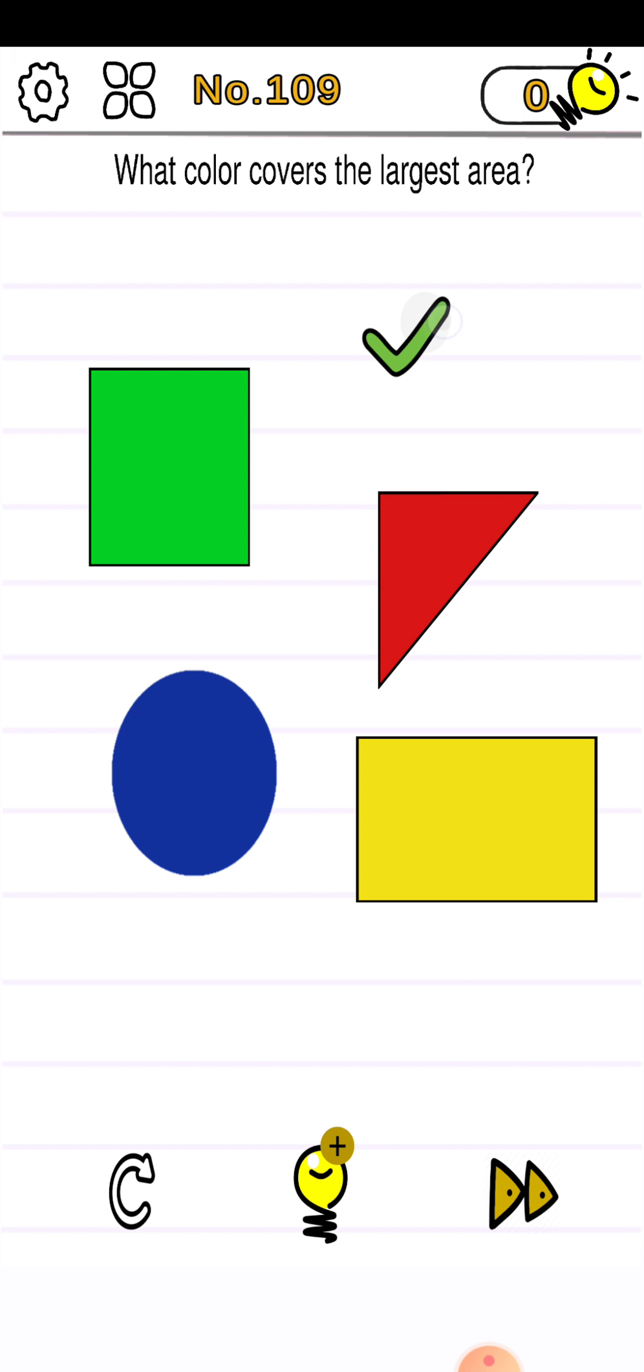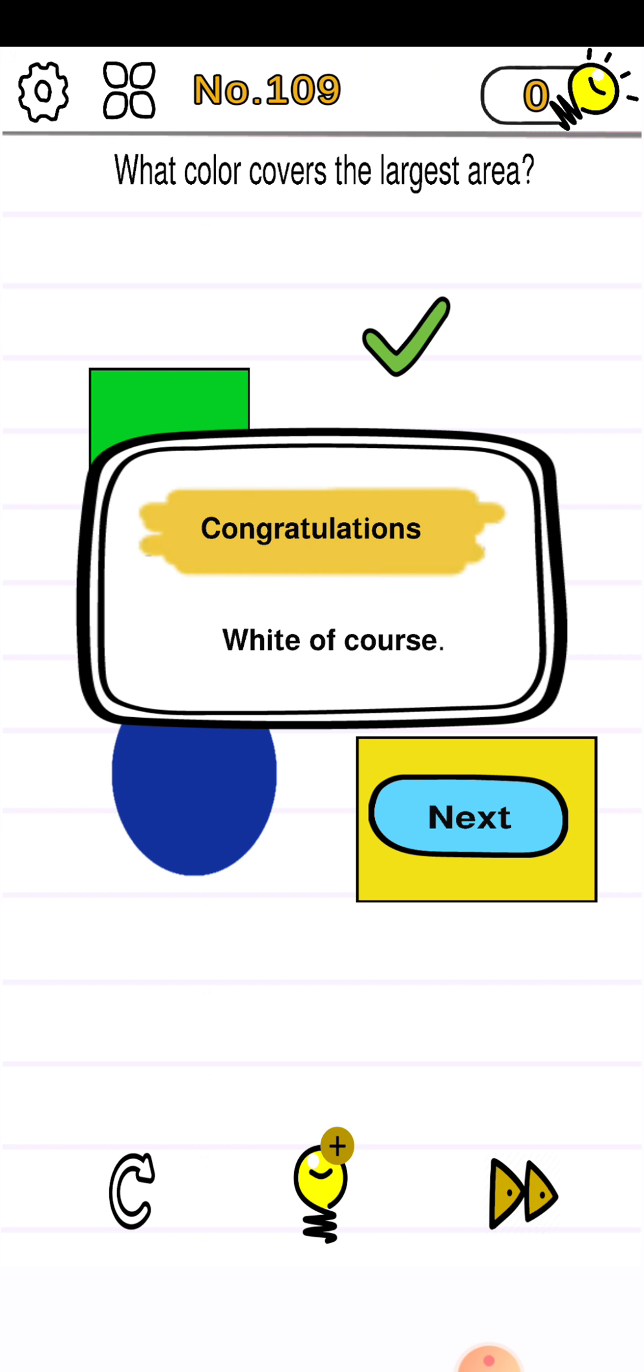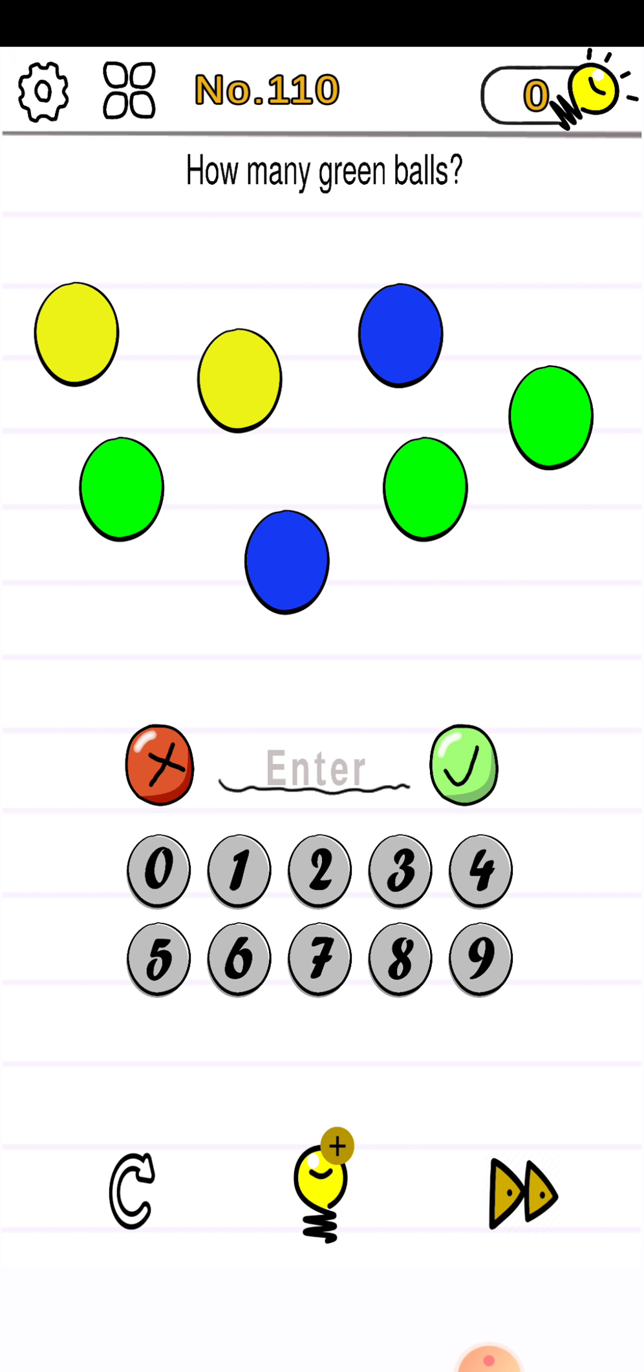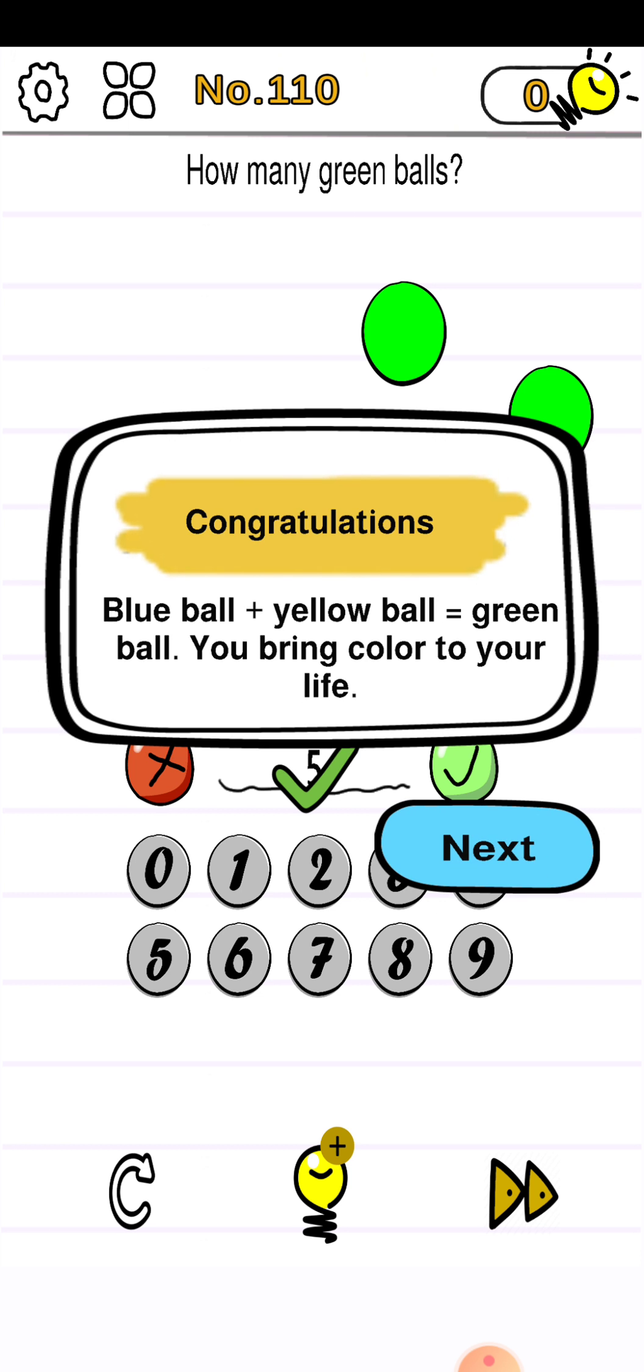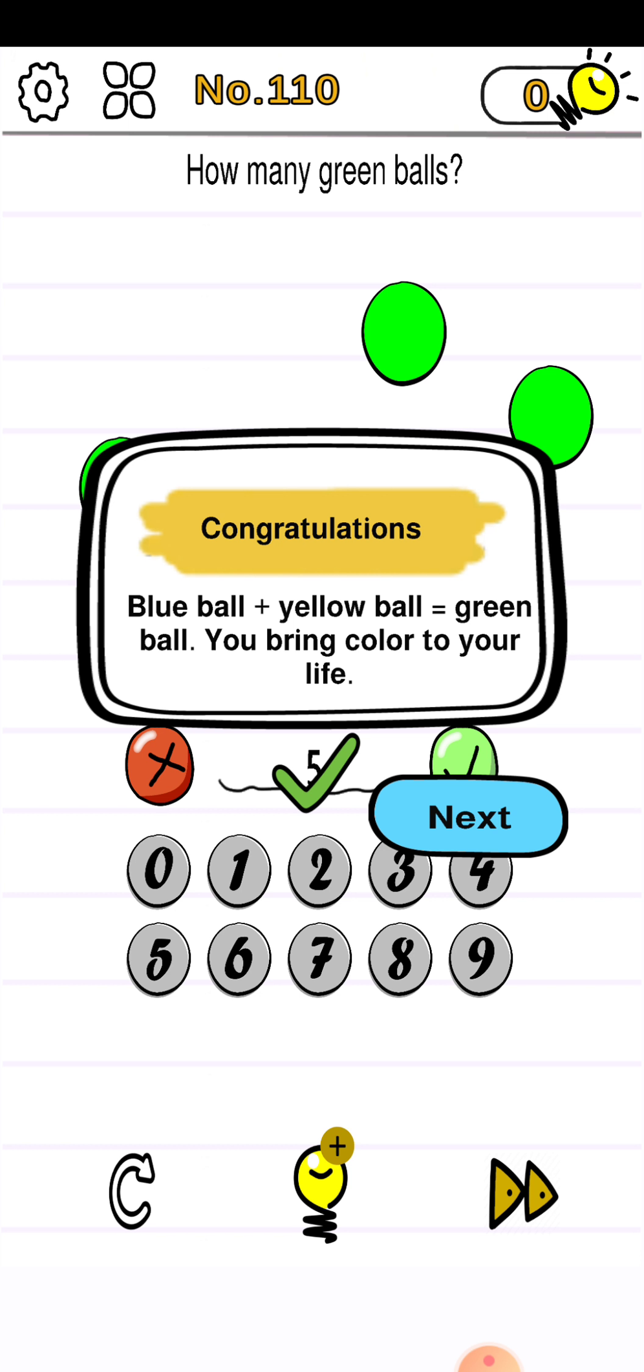Level 110. How many green balls? So three are already there and two can be made by merging these two colors. So now there are five green balls. Just click on the tick mark and the level is cleared. Thank you guys for watching this video.